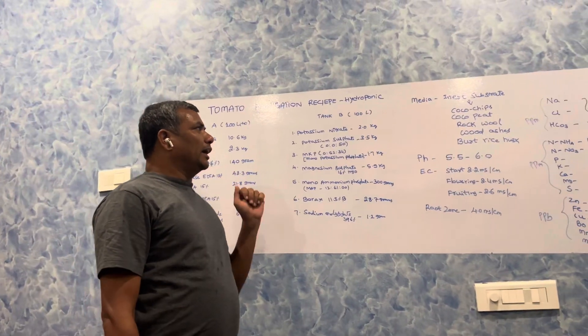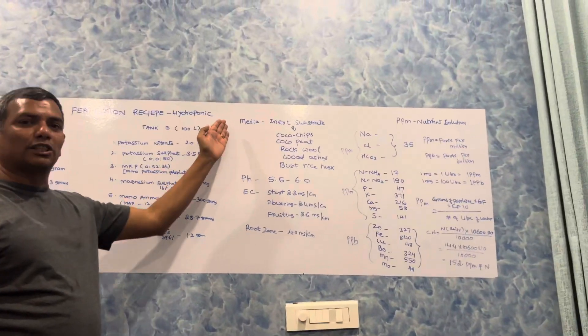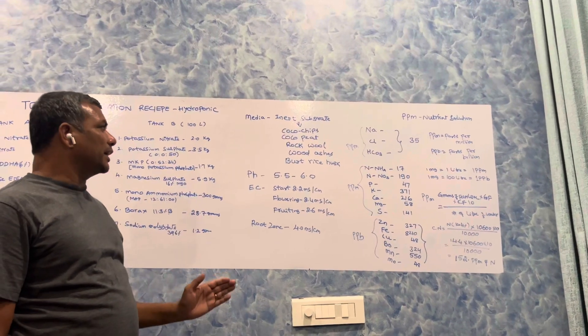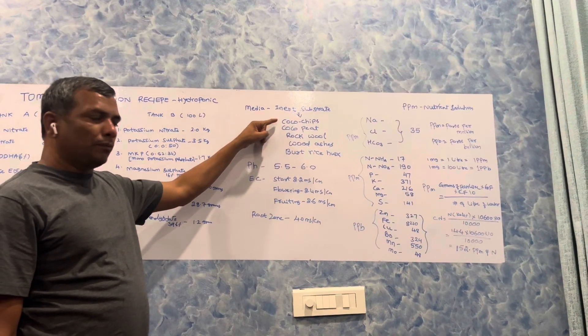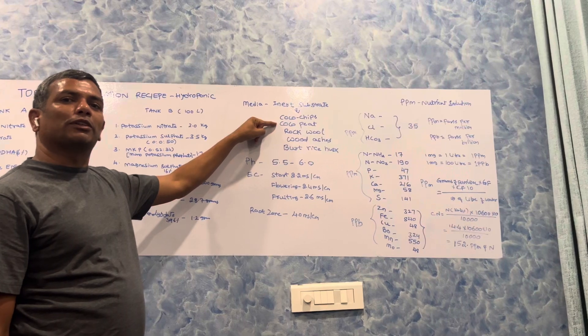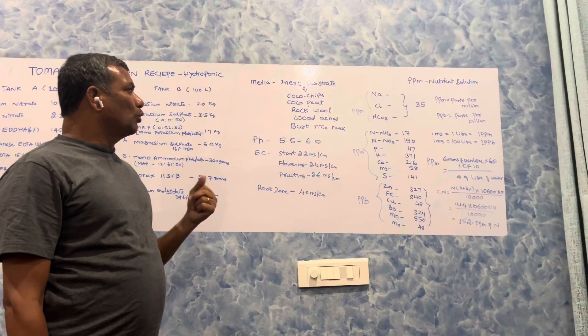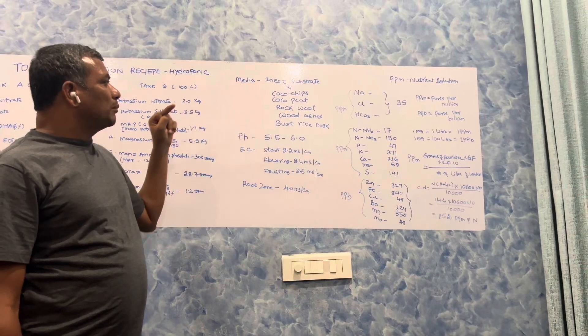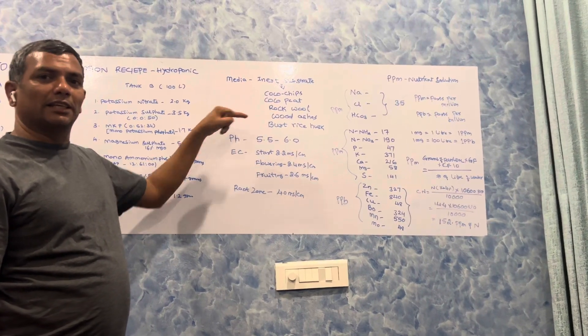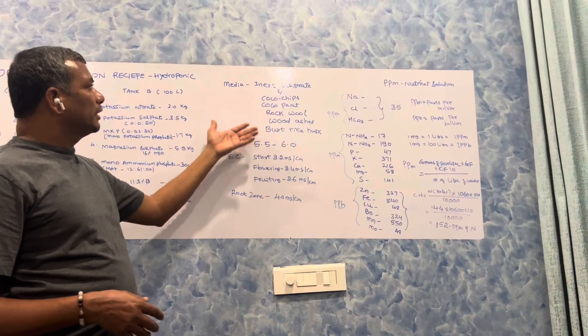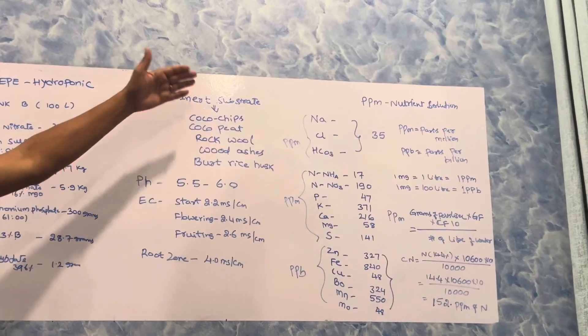What is the media here? The media used is inert substrate. This inert substrate can be cocoa chips, cocoa peat meant for substrate cultivation, rock wool (some places people use rock wool), wood ashes, and some countries use burnt rice husk as media. This solution is meant for these inert substrates.